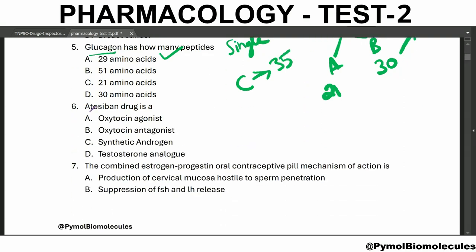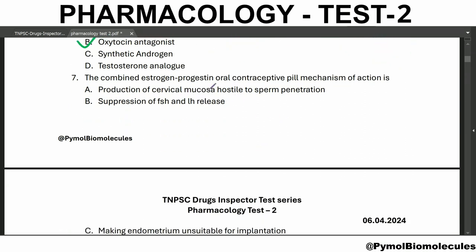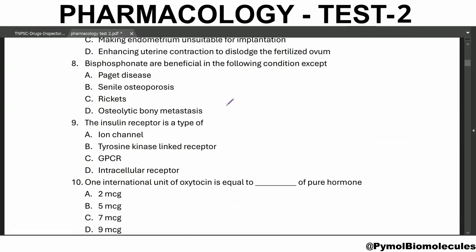Atosiban is a peptide analog of oxytocin and it is an oxytocin antagonist — also one of the tocolytics. The combined estrogen-progesterone oral contraceptive pill mechanism of action is suppression of FSH and LH release — follicle stimulating hormone and luteinizing hormone.